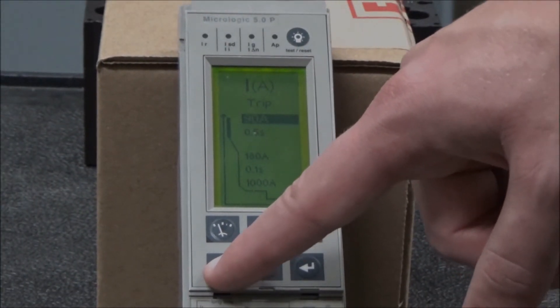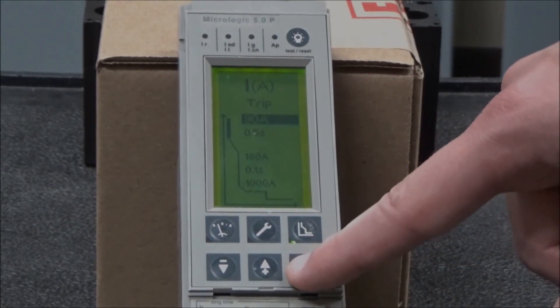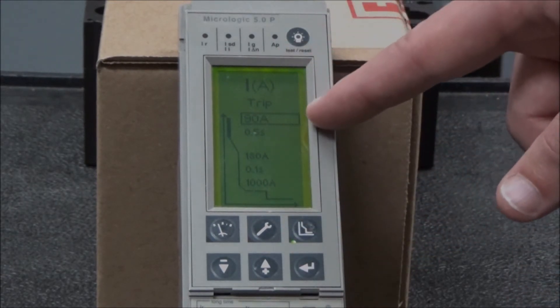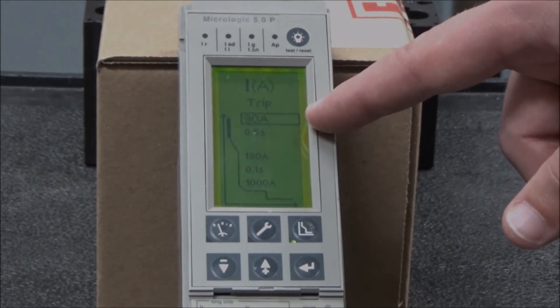Once you get to the desired amperage, you will hit the select again to save it. The long time amperage setting can be adjusted in 1 amp increments.